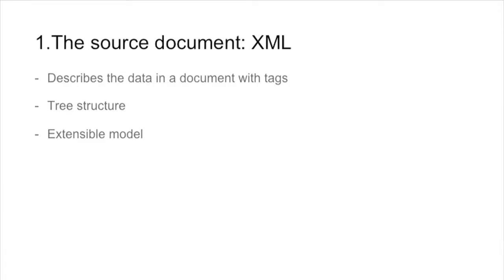You have the source document. The source document is encoded in XML. The purpose of this document is to mark up your text, to describe the data in a semantic way, to describe it with tags, with elements in a tree structure, and to mark up all the elements that will be useful in your edition later. You have great liberty in encoding this XML document. You can create new tags, new elements, as long as they do not overlap. You have a lot of freedom in creating that.